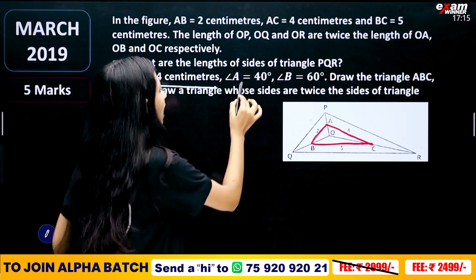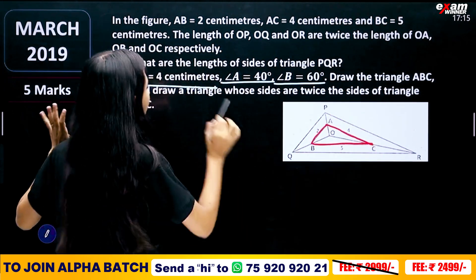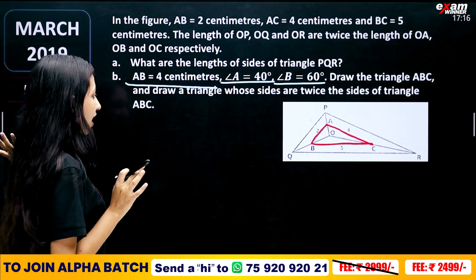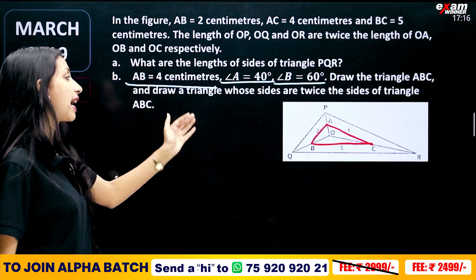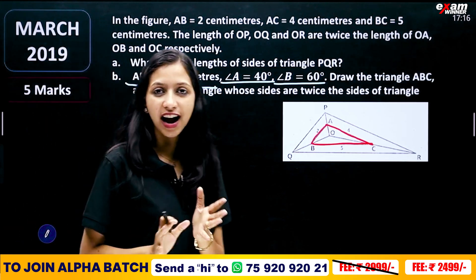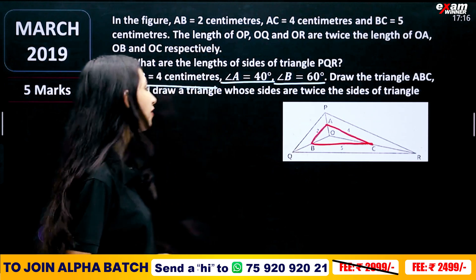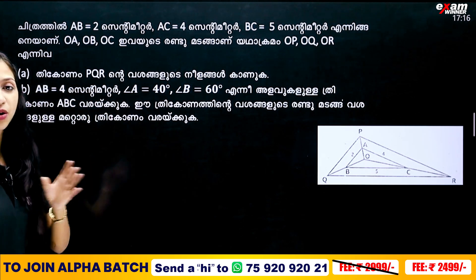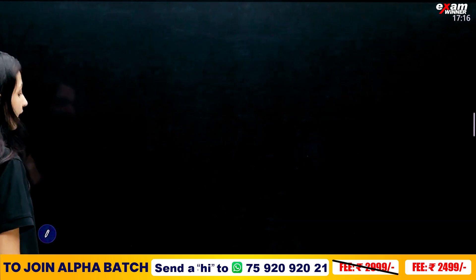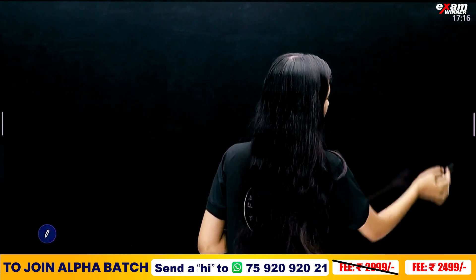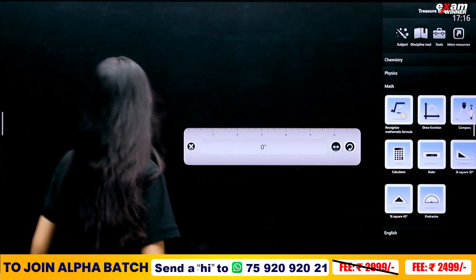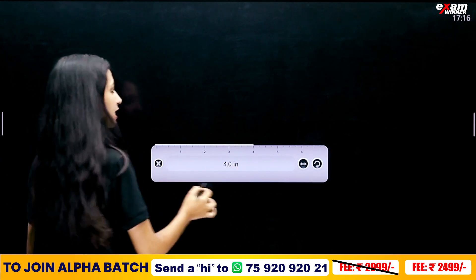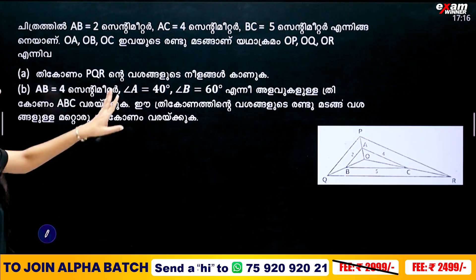The next question: AB is 4cm, angle A is 40 degrees, and angle B is 60 degrees. We will draw triangle ABC. Then we will draw a triangle whose sides are twice the sides of triangle ABC. AB is 4cm.